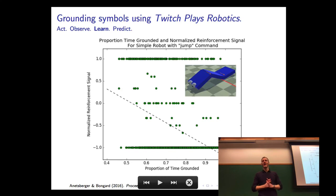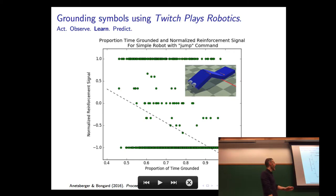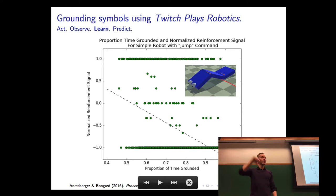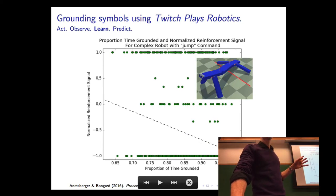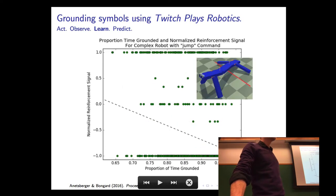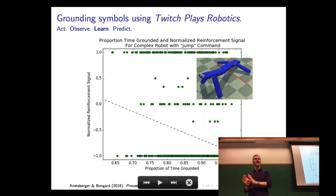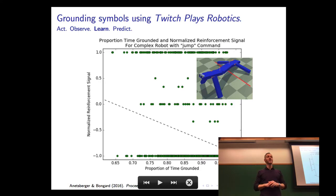We saw there is some relationship between the sensor data — the felt experience of the robot — and how the crowd responded to its action. It's not a perfect fit, but generally the more time the robot spent on the ground, the more no votes it received. Looking at the linear regression fit, there was a negative slope for the worm robot and also a negative slope for the legged robot, but the actual slopes are slightly different — meaning these two robots, because of their different morphologies, have grounded the symbols of language slightly differently.